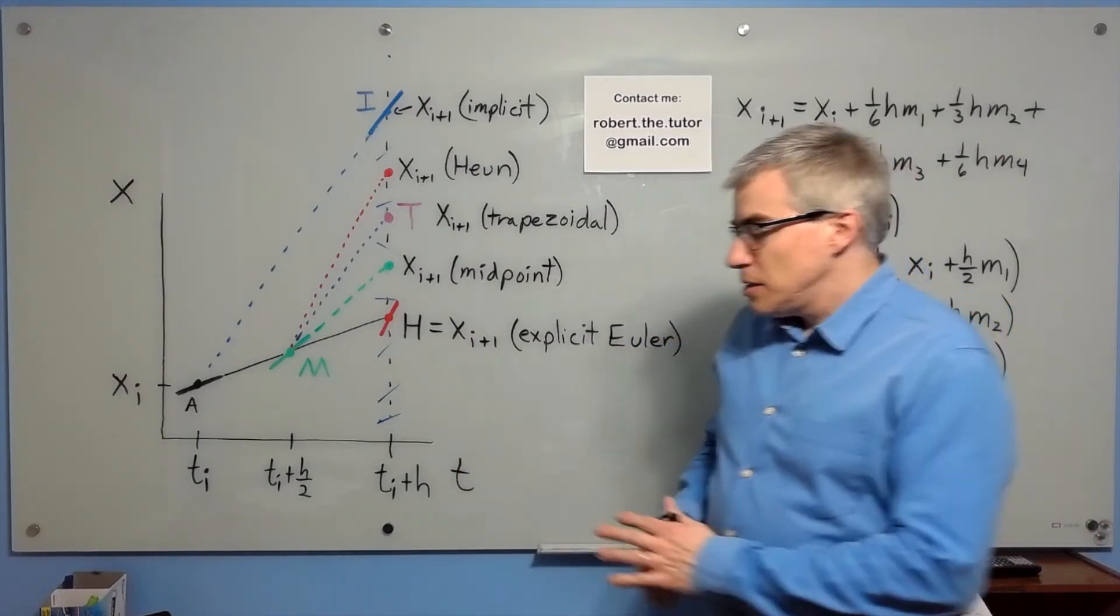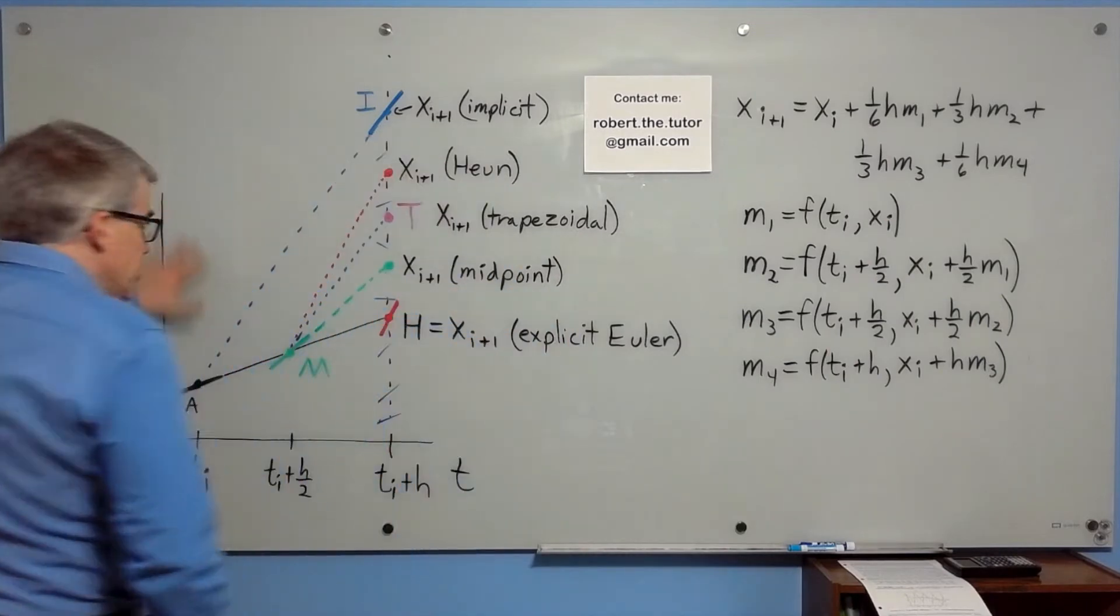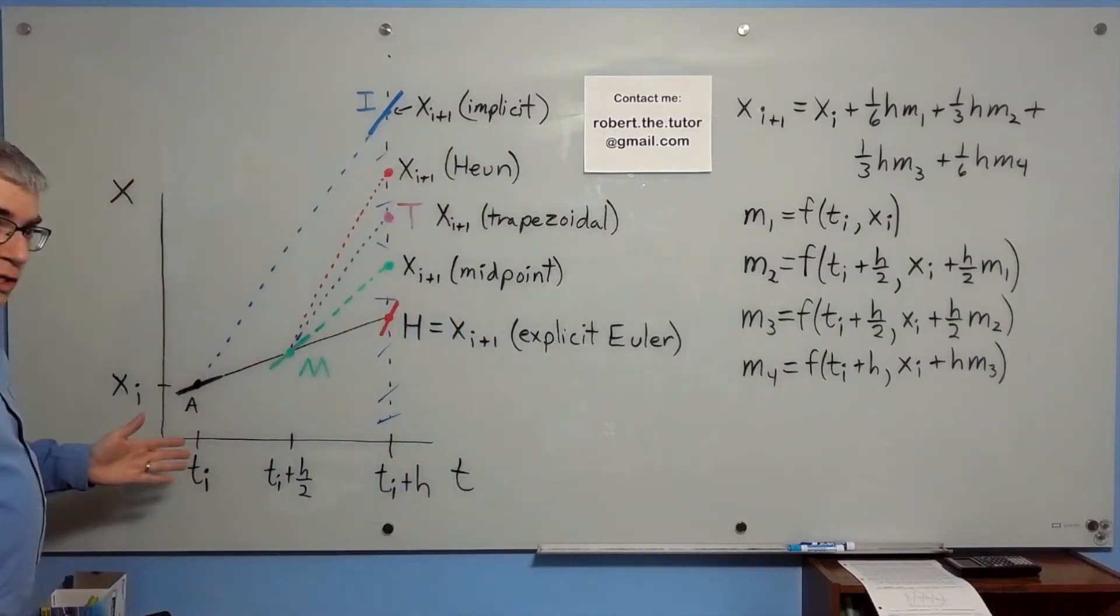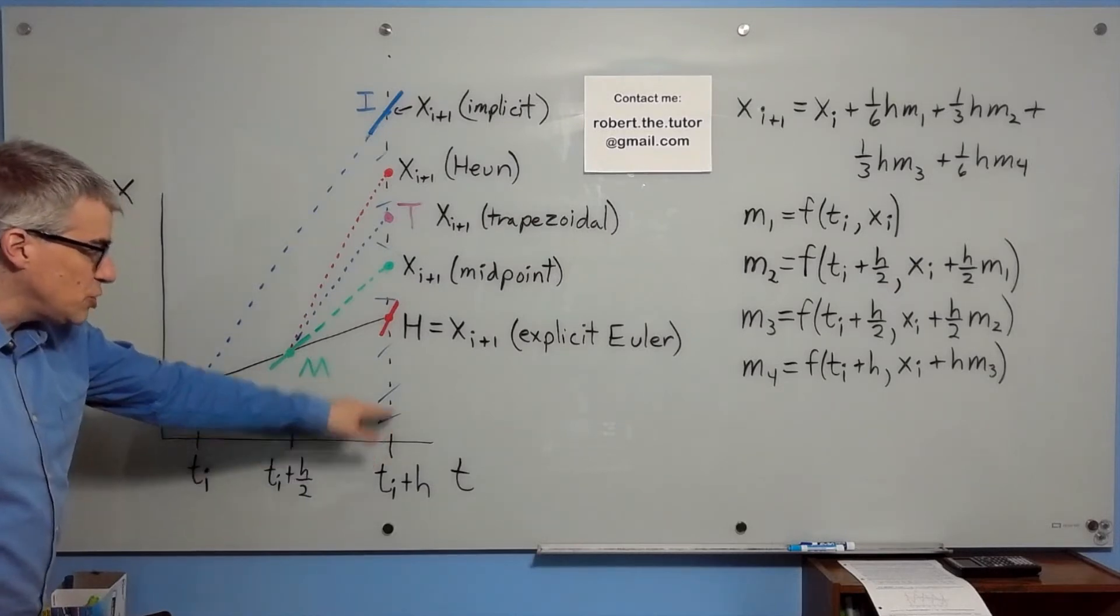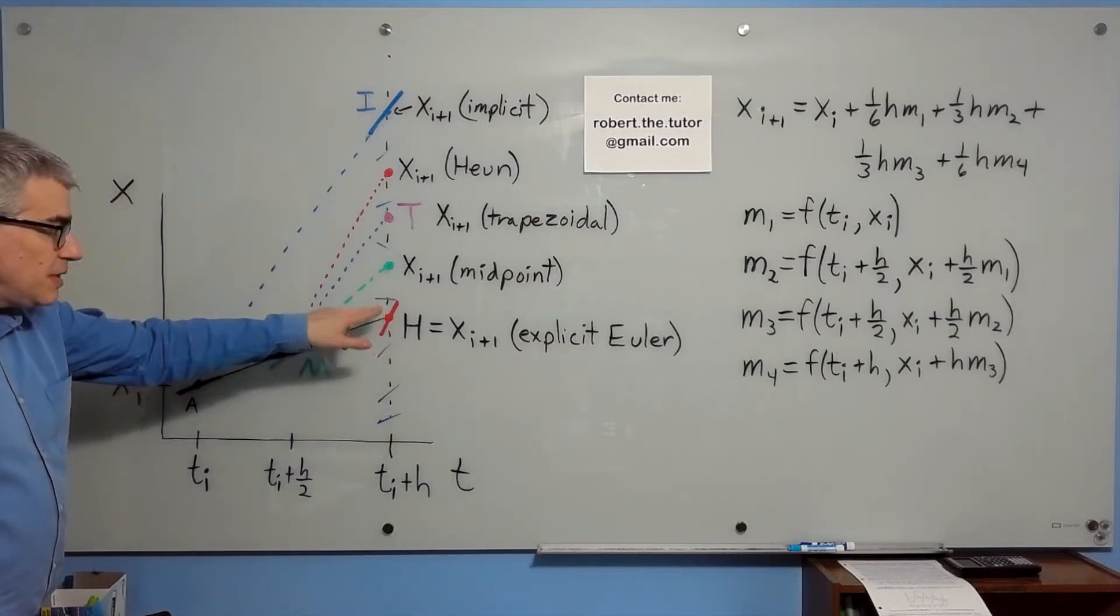First of all, the explicit method. We go here. Since we know the slopes everywhere from the differential equation, we can take the slope right here, extrapolate it from ti to ti plus h. We get the point here. That's our estimate.